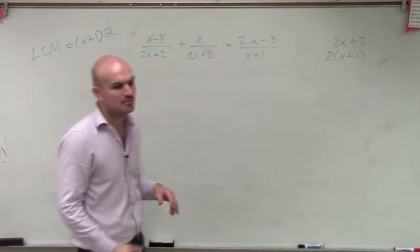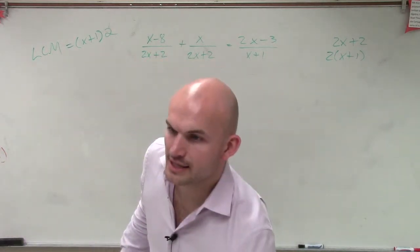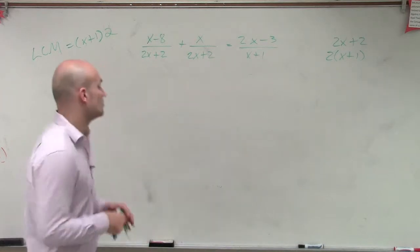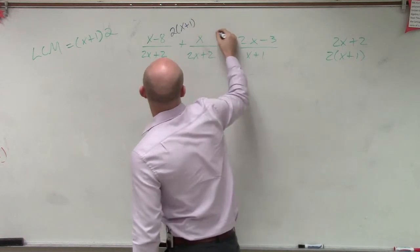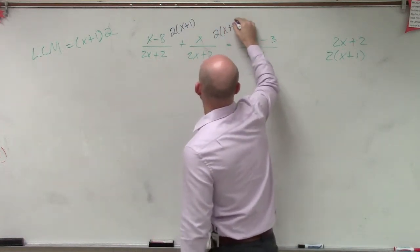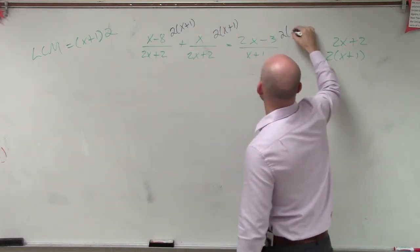So now what we're going to do is we're going to multiply every single term by our LCM. So when you take a look at this, what you'll do is you'll do 2 times x plus 1 times 2 times x plus 1 times 2 times x plus 1.